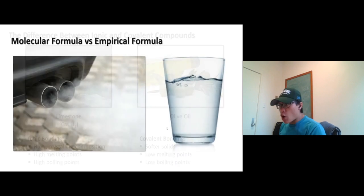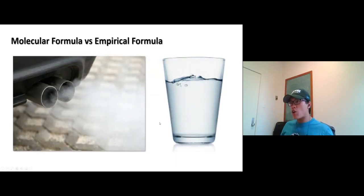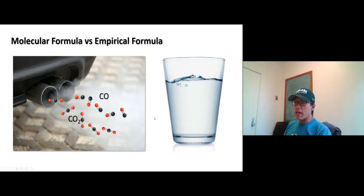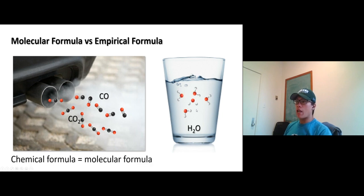And for covalent compounds, we represent a covalent compound using the molecular formula, which represents the actual number of each atom in the molecule. For example, CO2—there's actually one carbon, two oxygen. CO—one carbon, one oxygen. Water, H2O. The chemical formula of a covalent compound is molecular formula.